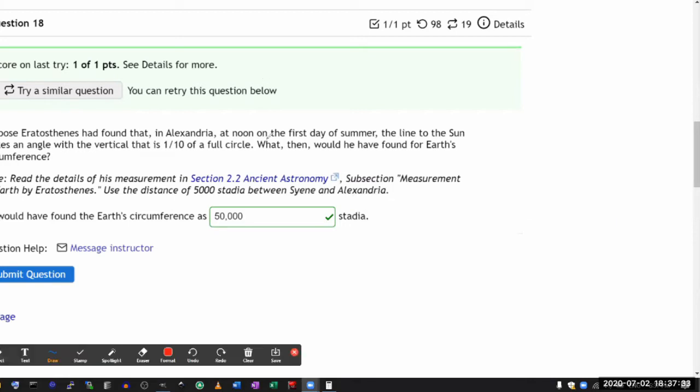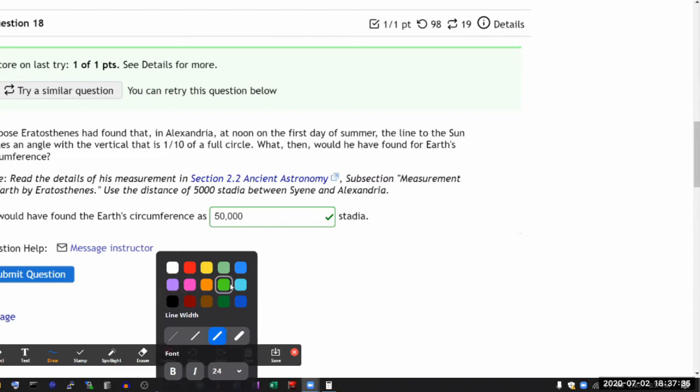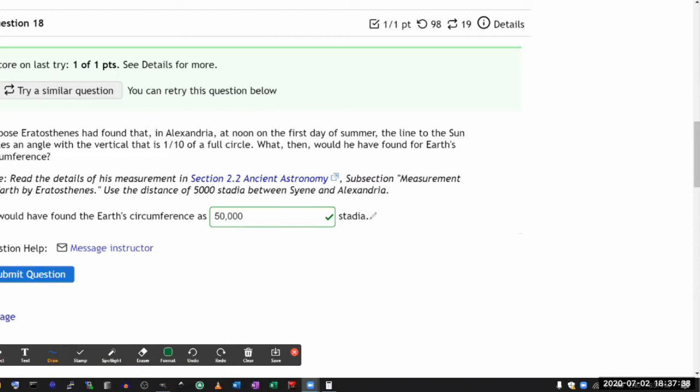So this is the geometric consideration that you see being worked out in the section. Imagine this is the Earth, and you're imagining kind of the side view of Earth, where that's the North Pole, this is South Pole. And one of the locations, Sian, it's somewhere near the equator or along the tropical.